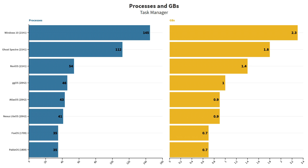Looking at processes and gigabytes in task manager after installation: Windows 10 is the highest with Ghost Specter up there too, but everything else below that is pretty well optimized. Revi, GGOS, Atlas, Nexus, Fox OS, and Probably OS are at the lowest numbers — Fox OS and Probably OS are tied at the very lowest with the exact same process and gigabyte usage. Lower is generally better here.